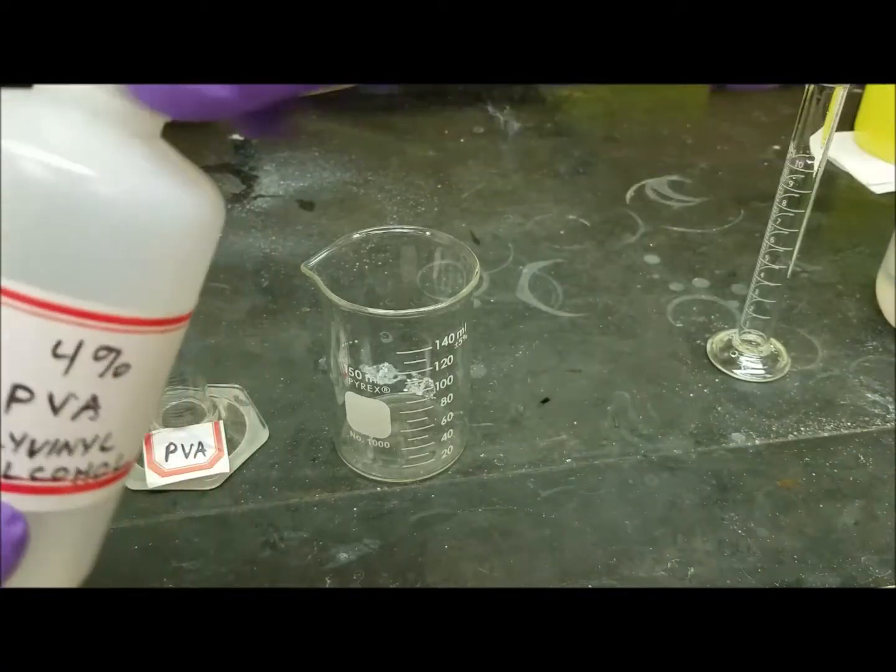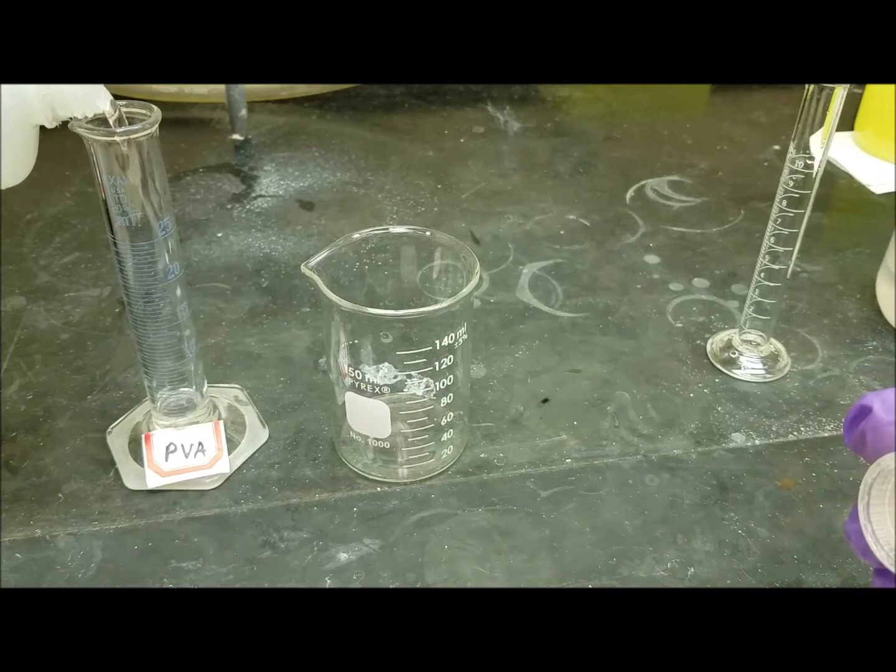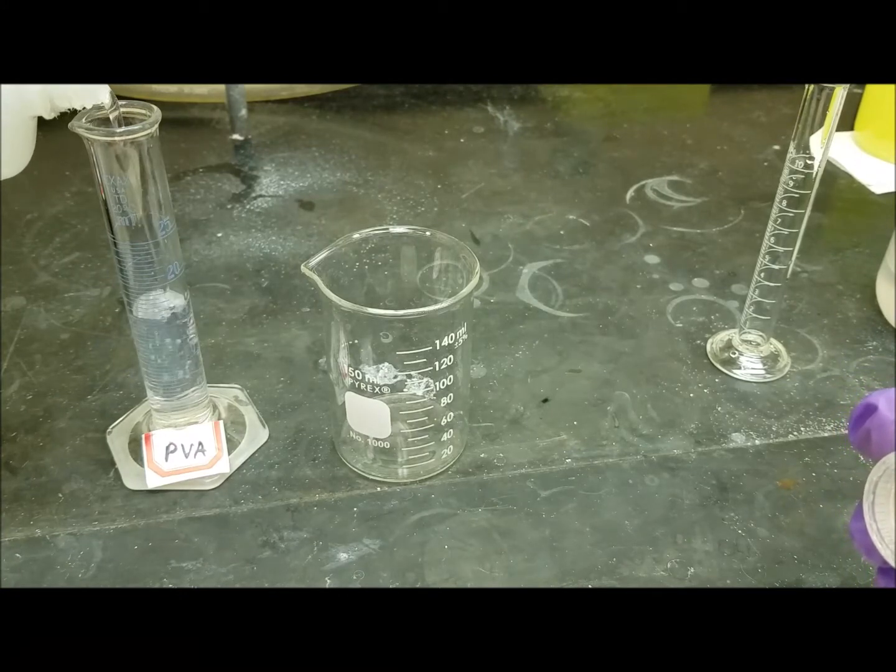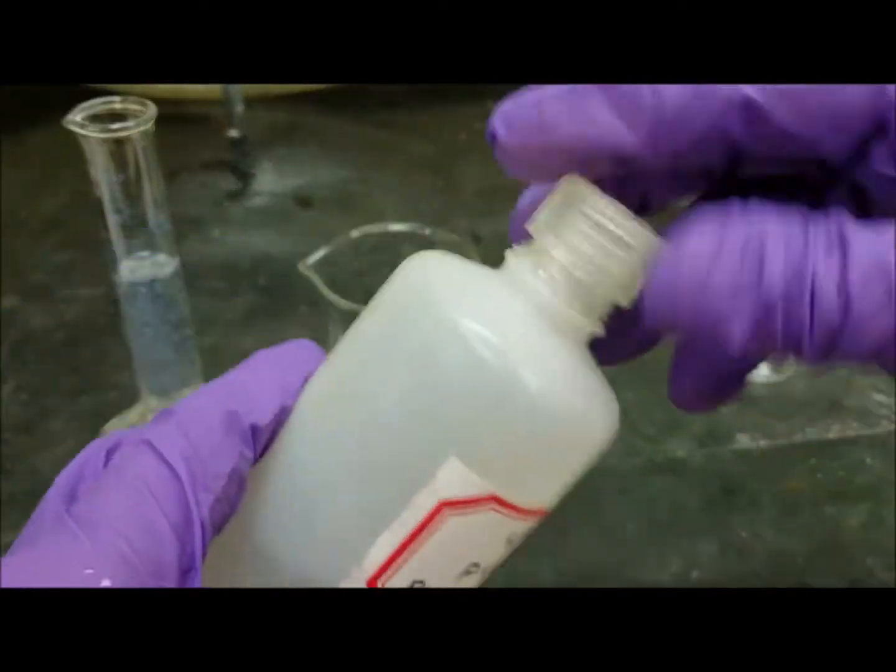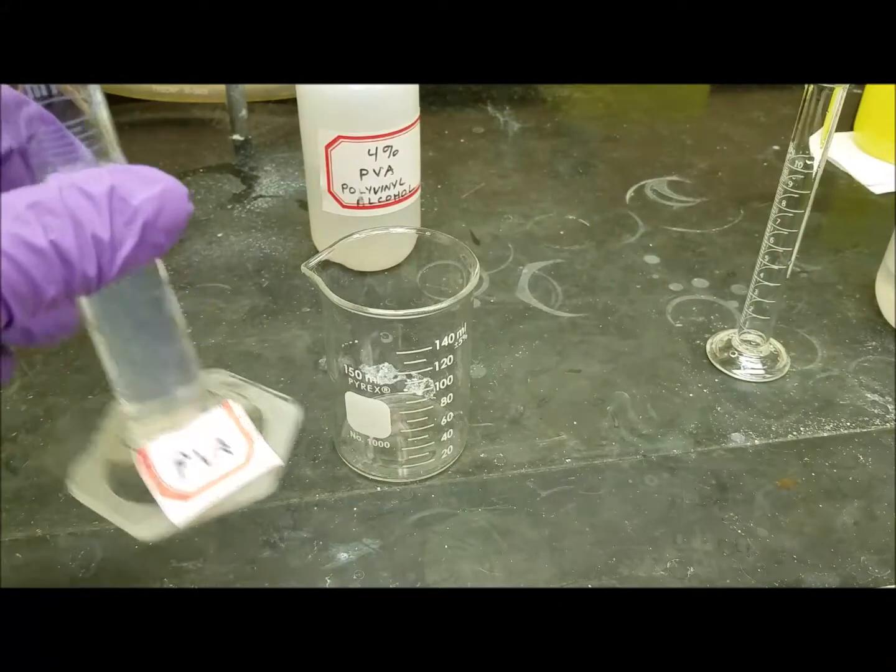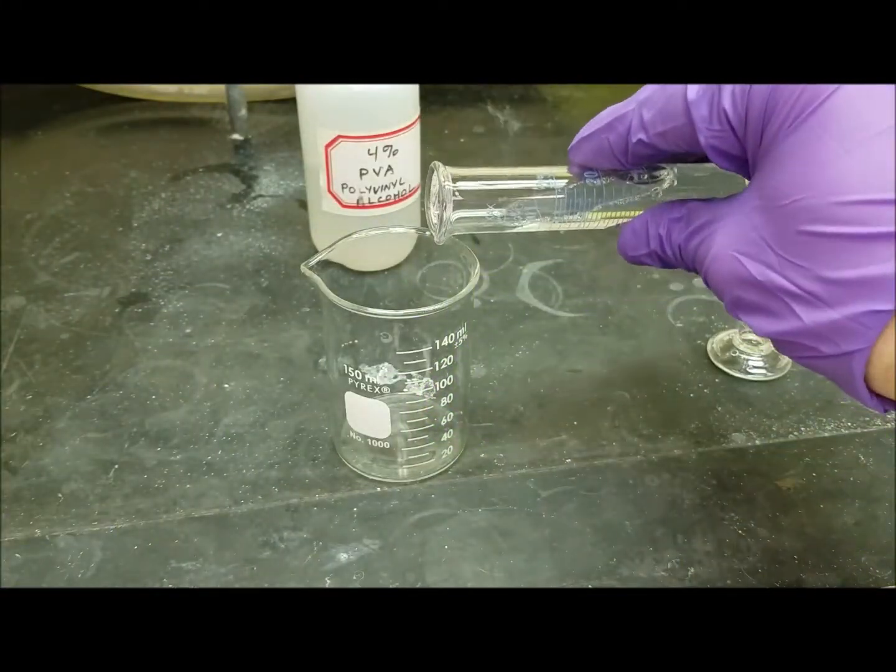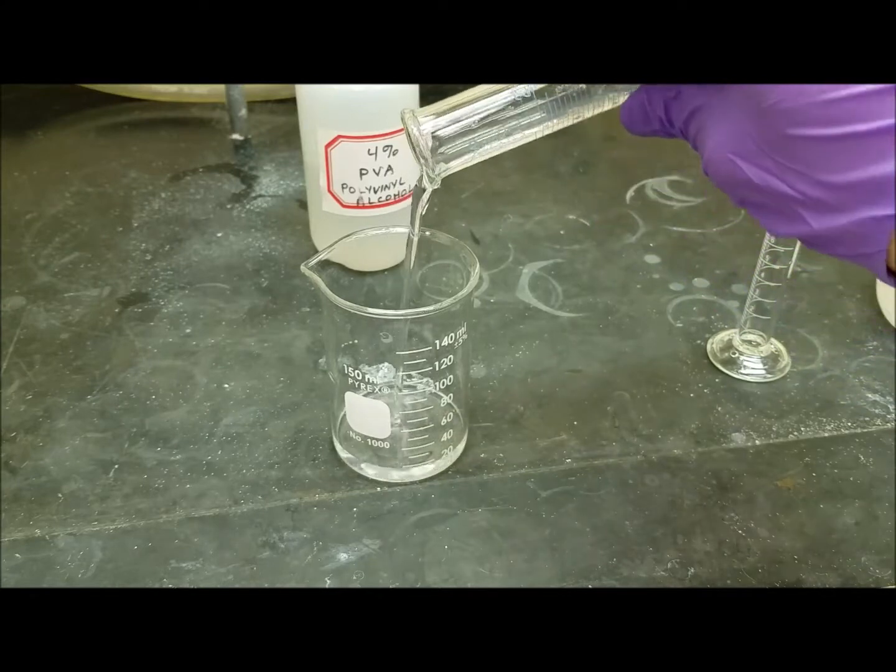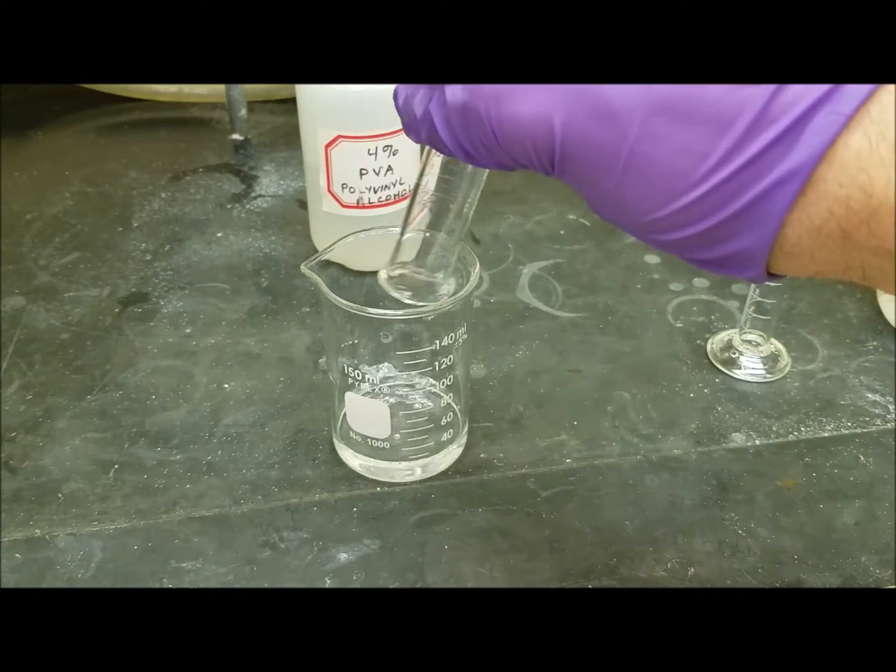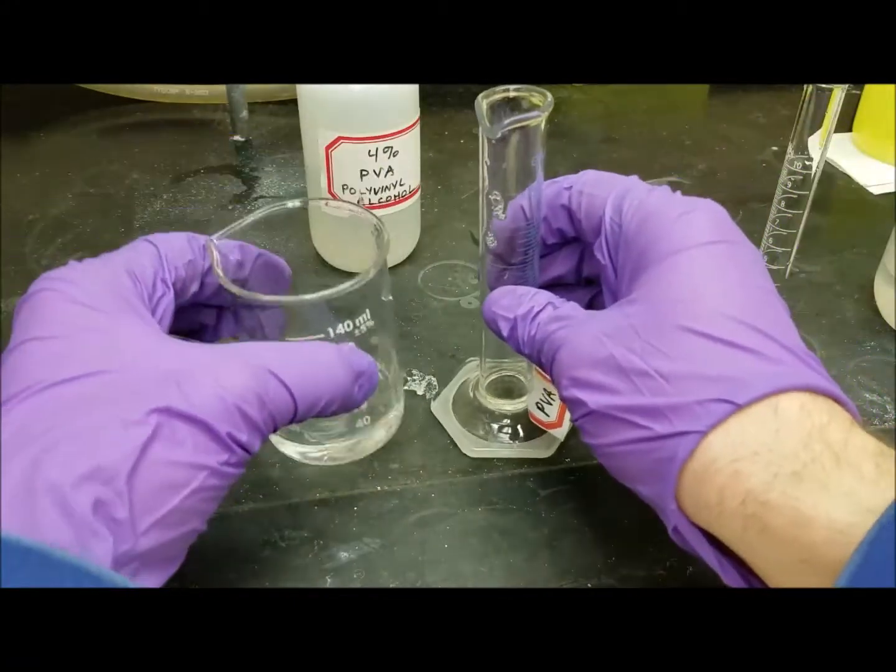So we're going to measure out 20 milliliters of 4% polyvinyl alcohol in water and notice how this is pretty viscous. That's because the polymer is dissolved in there and the polymer makes it pretty viscous, so we pour this down in there, but you notice it is still fluid, even under these circumstances.